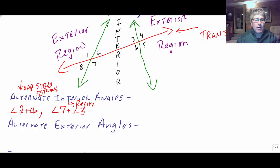So angle 1 and angle 5. And the other pair would be angle 8 and angle 4. Those are our alternate exterior angles.